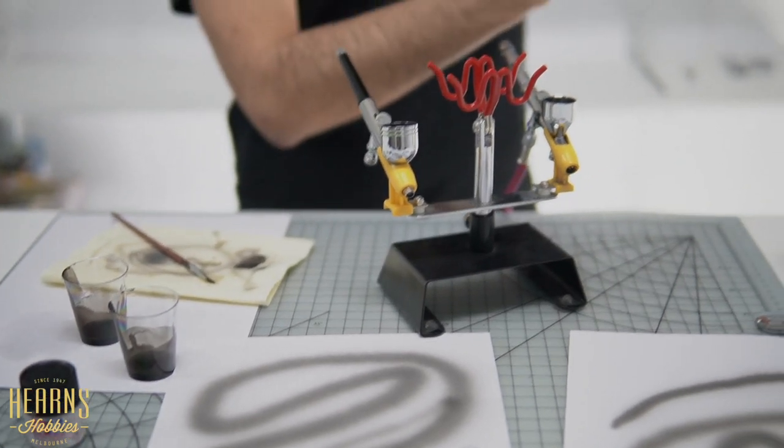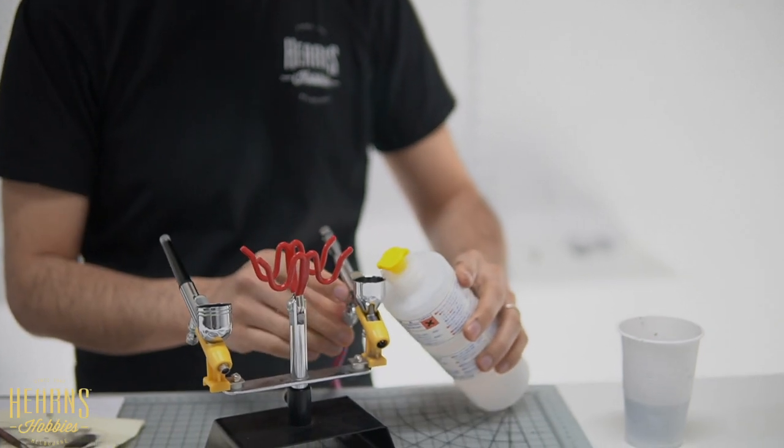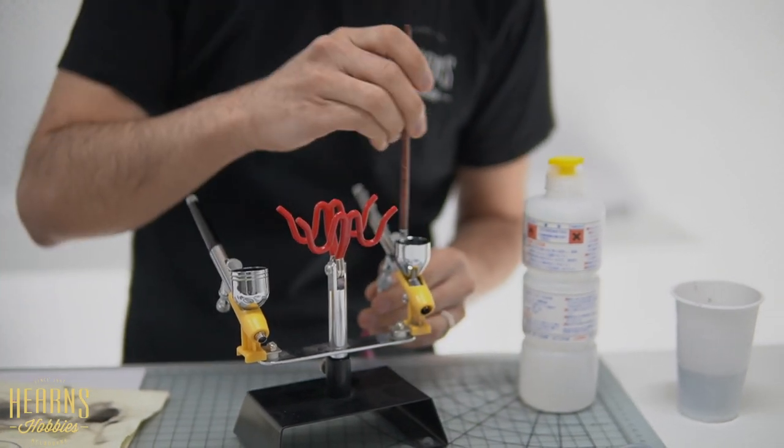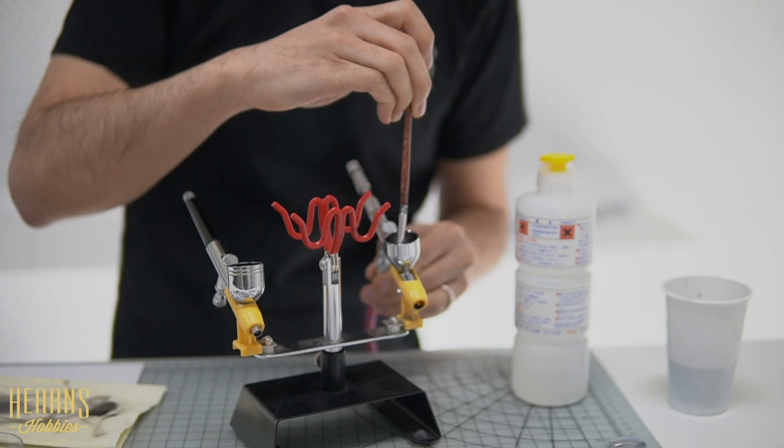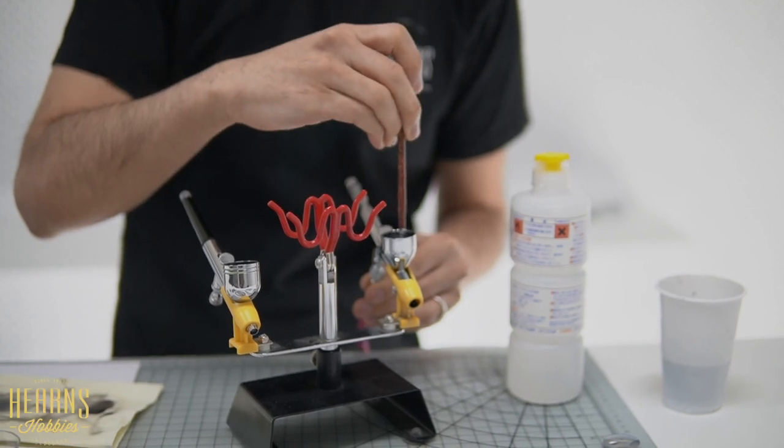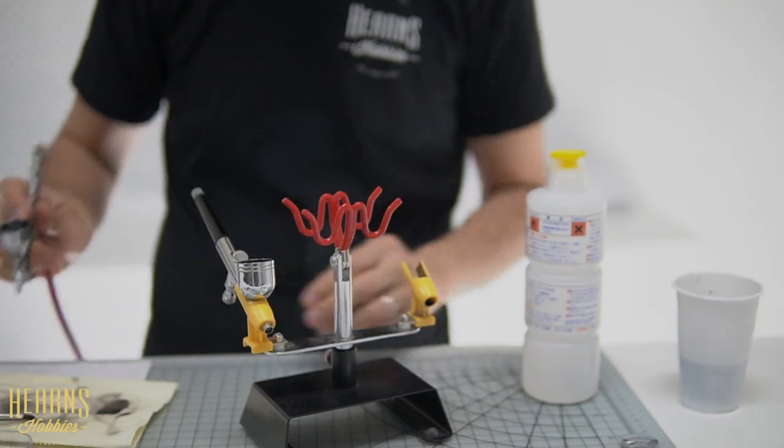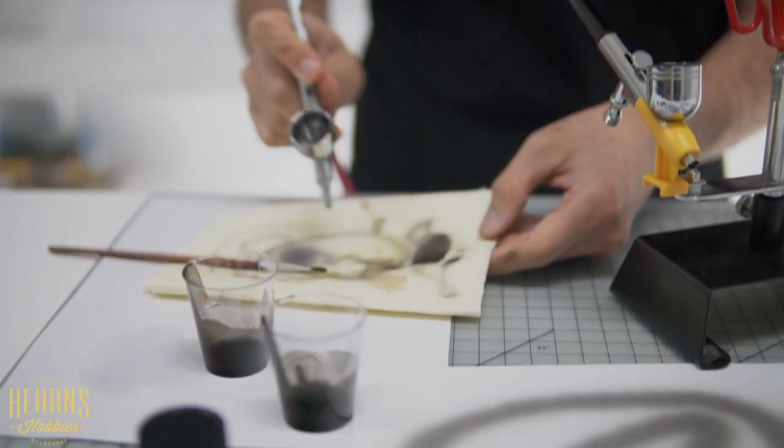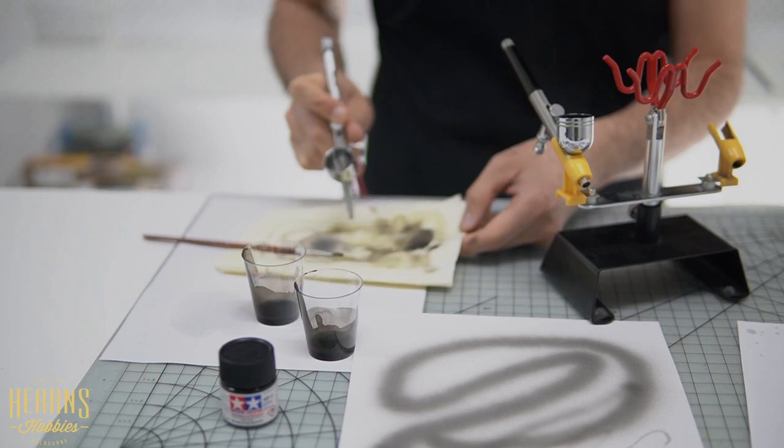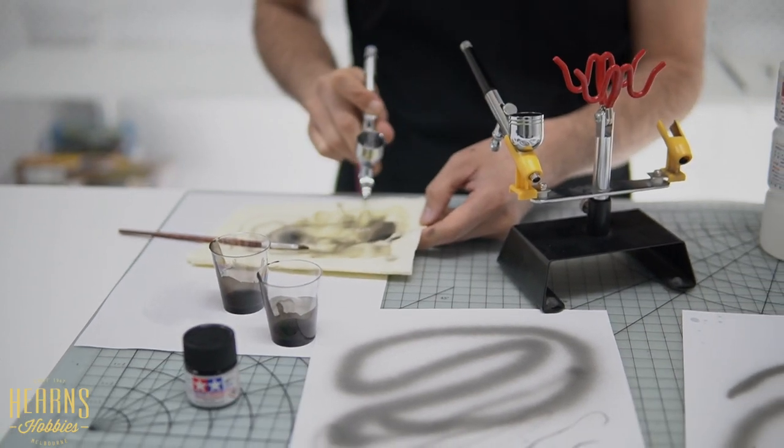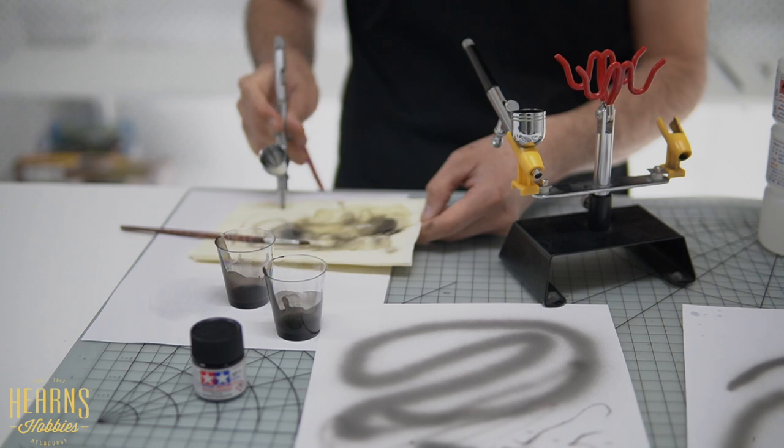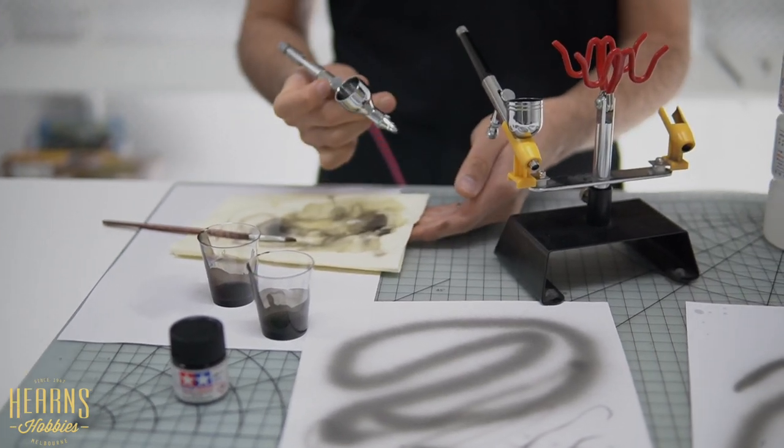And then from here. I'll just give it a little bit of thinners. So the thinners are pure. Give it a little bit of brush. Make sure you get it all the way around. And I'll just spray that out. So if you've got a cleaning pot, that'll be really handy. I'll just do it on here. Just so you've got a quick idea of what's happening. So I'm just blowing out this thinner. And as the thinner's coming through, it's clearing out the nozzle. And also the cup is getting fully cleaned out as well.